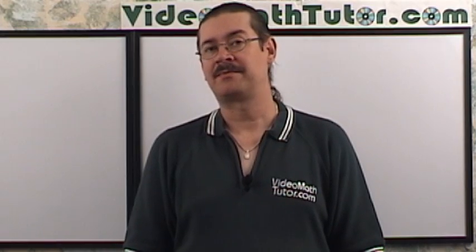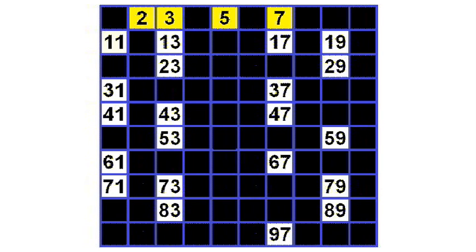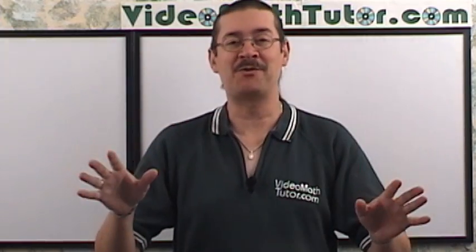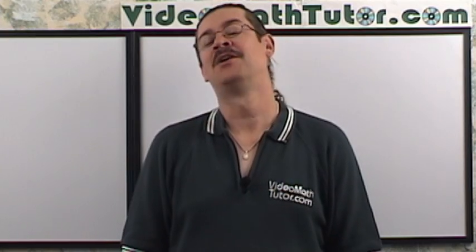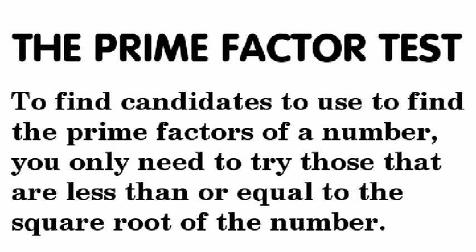Now what's our next prime number? Well, it's 11, seen here. But wait, we don't have to do anything with 11. Why is that? Well, there's this little something called the prime factor test. The prime factor test: To find candidates to use to find the prime factors of a number, you only need to try those that are less than or equal to the square root of a number.